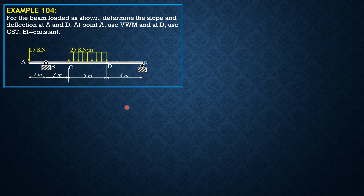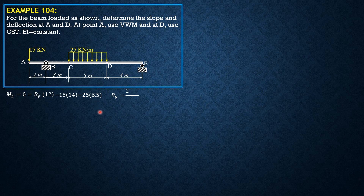Here is the given figure. First, summation of moments about E equals zero to solve for the reaction at B. So B_y times 12 minus 15 times 14 minus 25 times 5 times 6.5 equals zero (noting that 2.5 plus 4 is 6.5), so B_y equals 2045 over 24 kilonewtons.